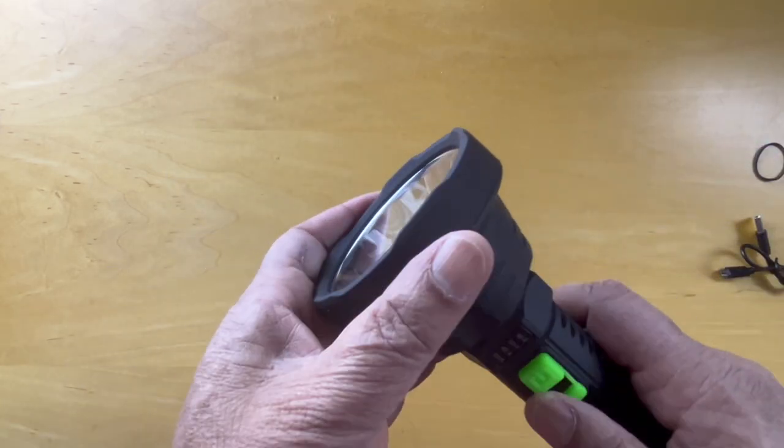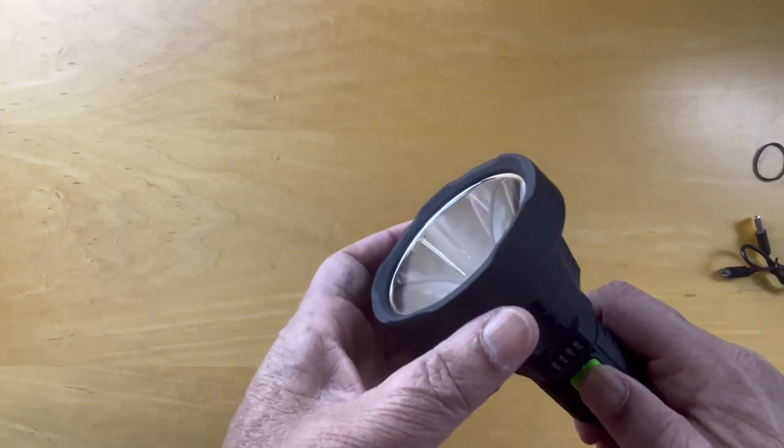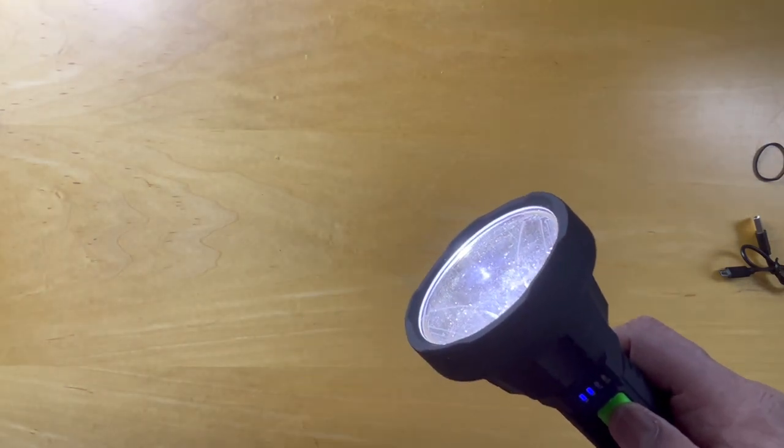The first setting when you hit this button here is the brightest. It's rated at a thousand lumens. The second setting is 480 lumens, and the lowest intensity is 70 lumens. Now the duration of this at maximum would be about three hours, and at 480 lumens it would be about four hours, and at 70 lumens it would be about 11 hours.